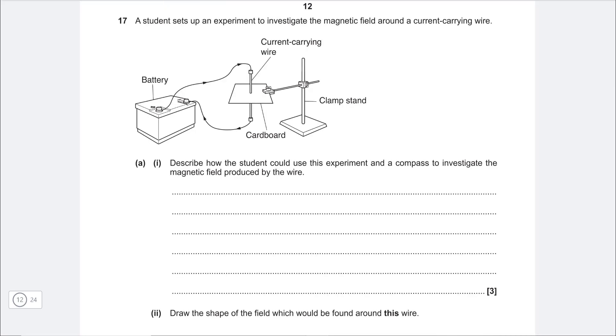Okay, another one. A student sets up an experiment to investigate the magnetic field around a current-carrying wire. Describe how the student could use this experiment and a compass to investigate the magnetic field produced by the wire. Now this is typically one of the required practicals. This is typically done for a permanent magnet, however we could also do that for an electromagnet. The first thing that we need to do is we need to place the compass onto the card.